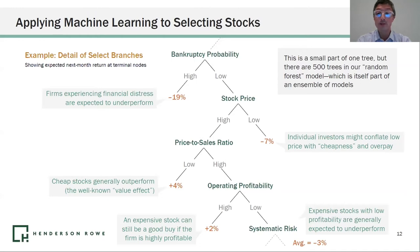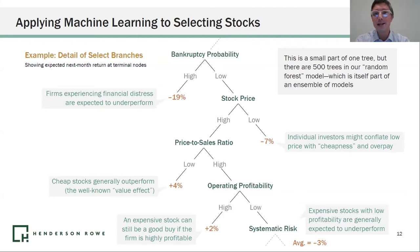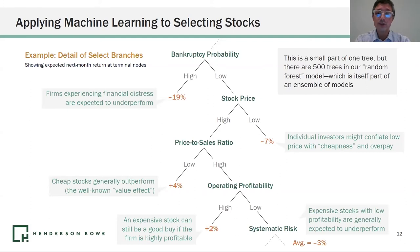If a company has a low stock price, that company is much more likely to be targeted by individual investors. They tend to conflate a low price with a cheap stock. So low-price stocks actually tend to be overvalued. The model says: if it's got a very low stock price, even with a low probability of distress, we expect it to have negative returns.